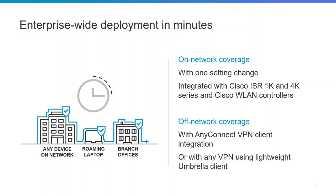On-prem protection is as simple as diverting your DNS to Umbrella. For off-network coverage, there is AnyConnect integration — an upgrade for the AnyConnect client to allow the Umbrella roaming component — so you're always protected from a DNS standpoint. Or if you have a third-party VPN, you can download the Umbrella roaming client as well as an option.